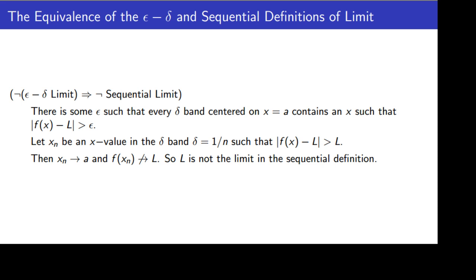Now, if L were the sequential limit, that would mean that f of x sub n has to converge to L. But we know that f of x sub n is going to be further than epsilon away from L for every N, because that's how we built our sequence. Which means that f of x sub n cannot converge to L, because all of those sequential points are going to be more than epsilon away from L. So L is not the limit of f of x sub n, which means L is not the sequential limit of the function.